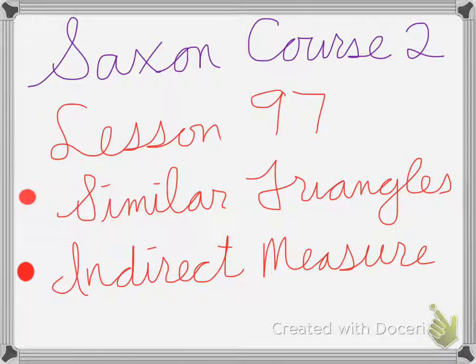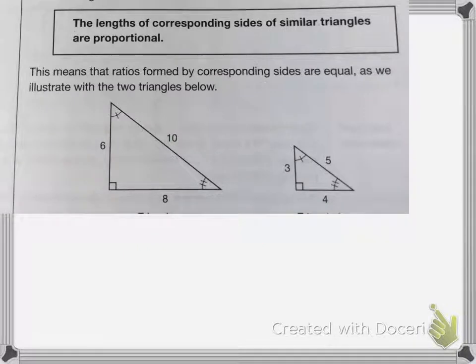Saxon Course 2 Lesson 97 is on Similar Triangles and Indirect Measure. So similar triangles have proportional lengths. If you notice that our long side here is 10 and over here it's 5, and 10 divided by 2 equals 5, it should hold true for all the other sides. 6 divided by 2 is 3 and 8 divided by 2 is 4.